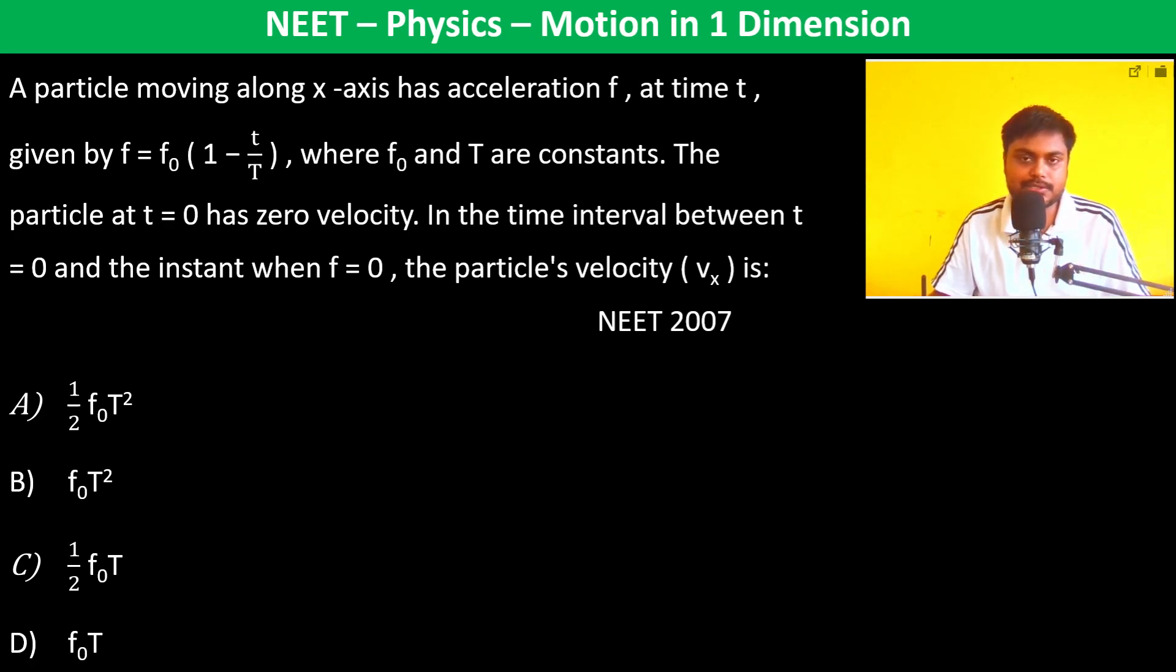A particle moving along the x-axis has acceleration f at time t given by f equals f₀(1 minus t by T), where f₀ and T are constants.